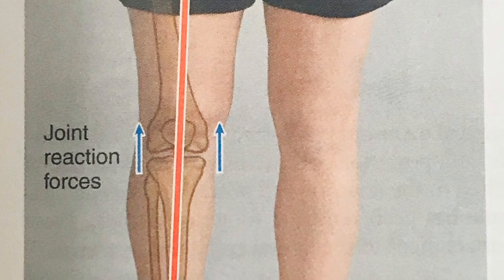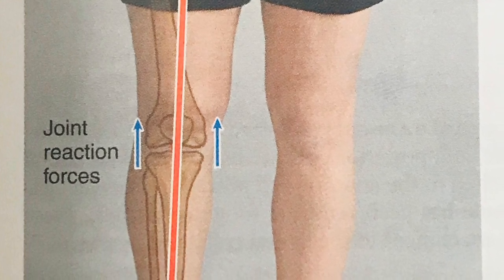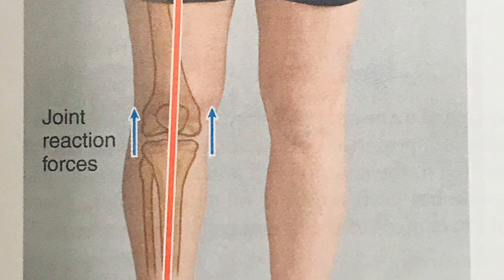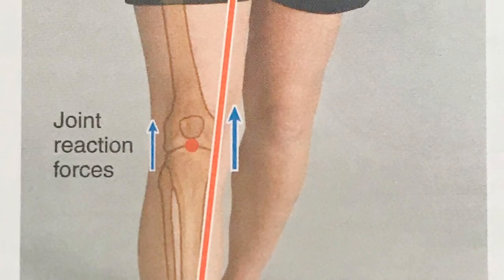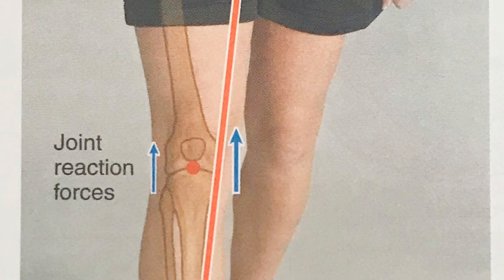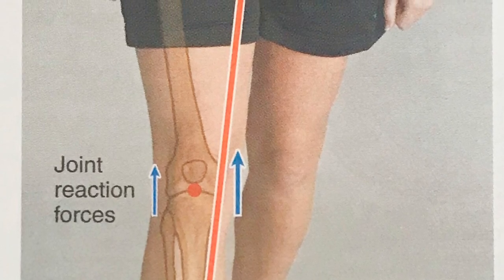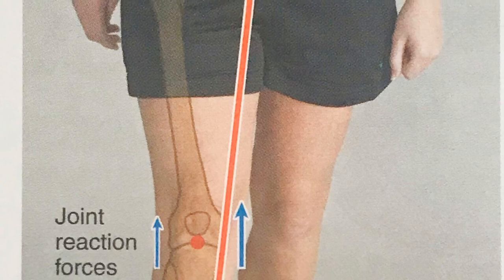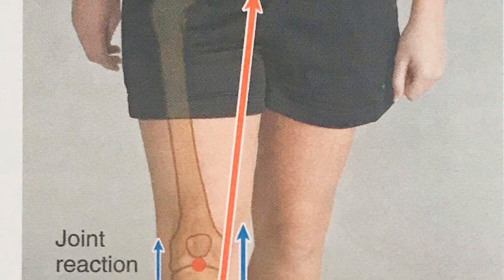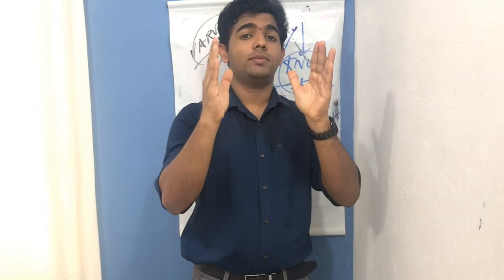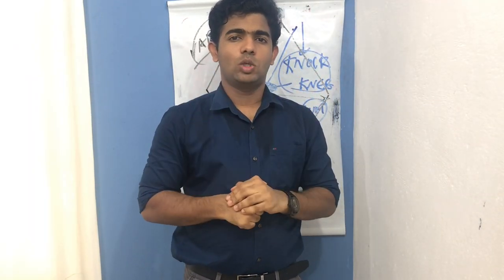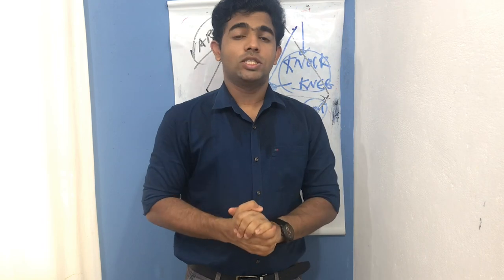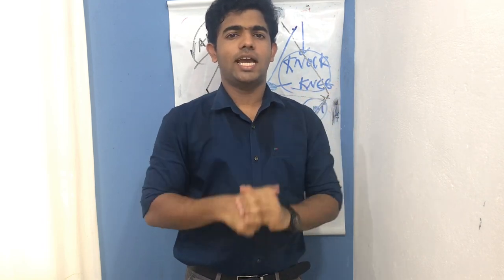The shift in joint axis is important: the normal joint reaction force passes slightly medial to the knee joint. In unilateral stance and daily activities, the line shifts completely to the medial side, creating an adduction moment that exaggerates medial compartment problems. With that, we conclude the discussion of genu varum and valgum. Tomorrow's session will cover the meniscus, joint capsule, and ligaments in the knee complex.